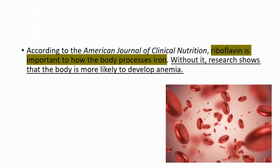According to the American Journal of Clinical Nutrition, riboflavin is important to how the body processes iron. Research shows that without it, the body is more likely to develop anemia. So vitamin B2 is important for iron absorption and processing, and without it, it can cause iron deficiency anemia.